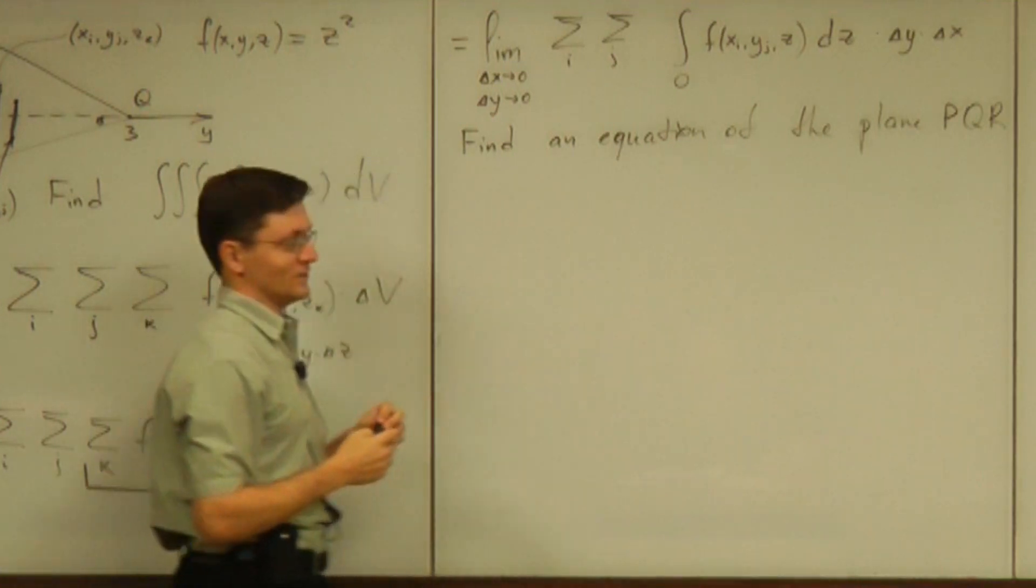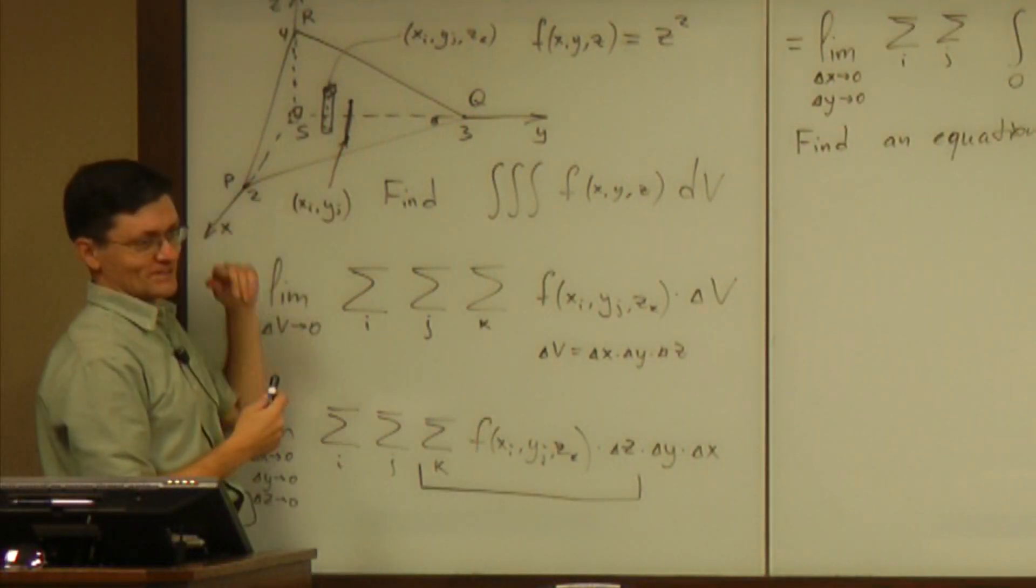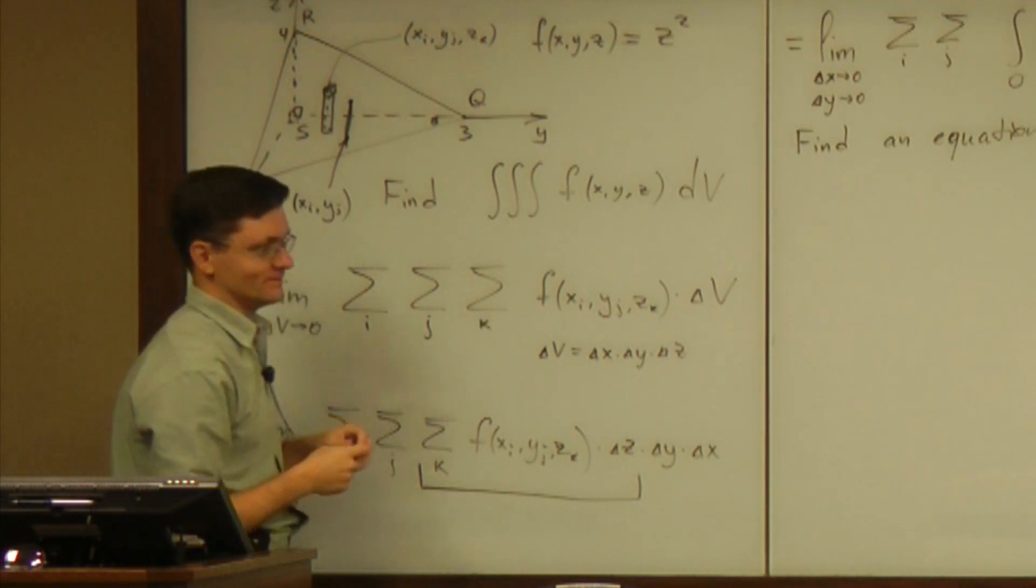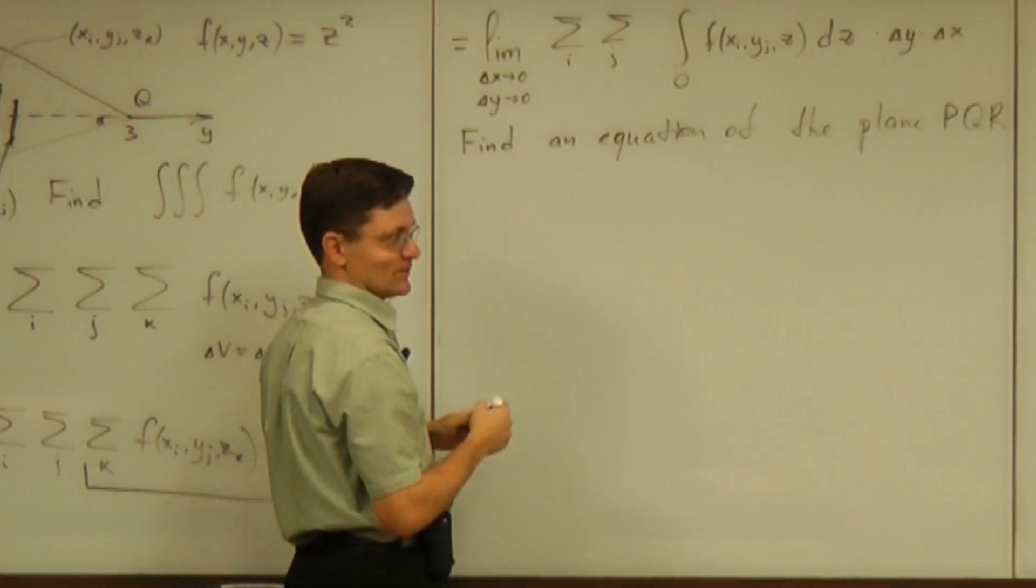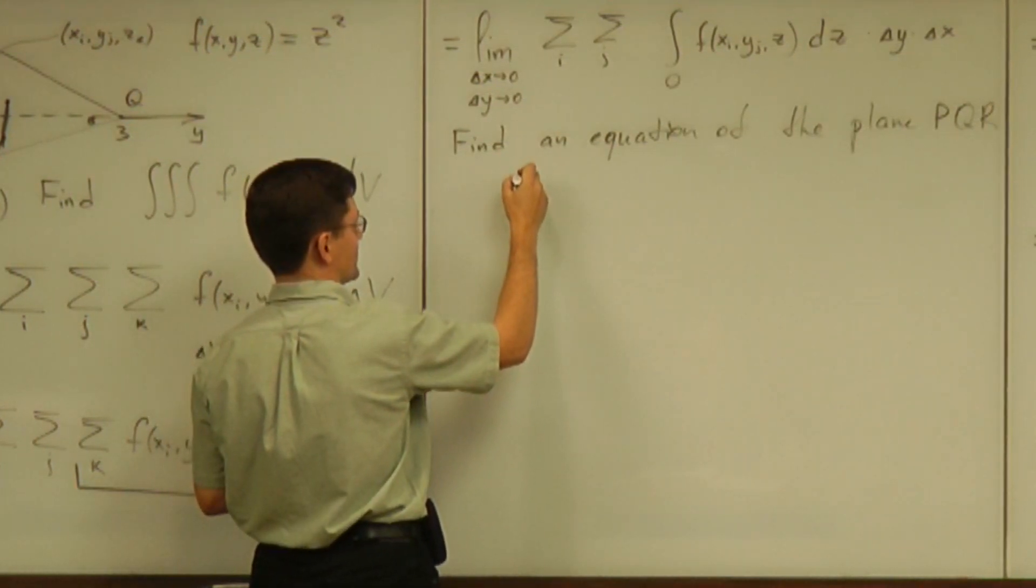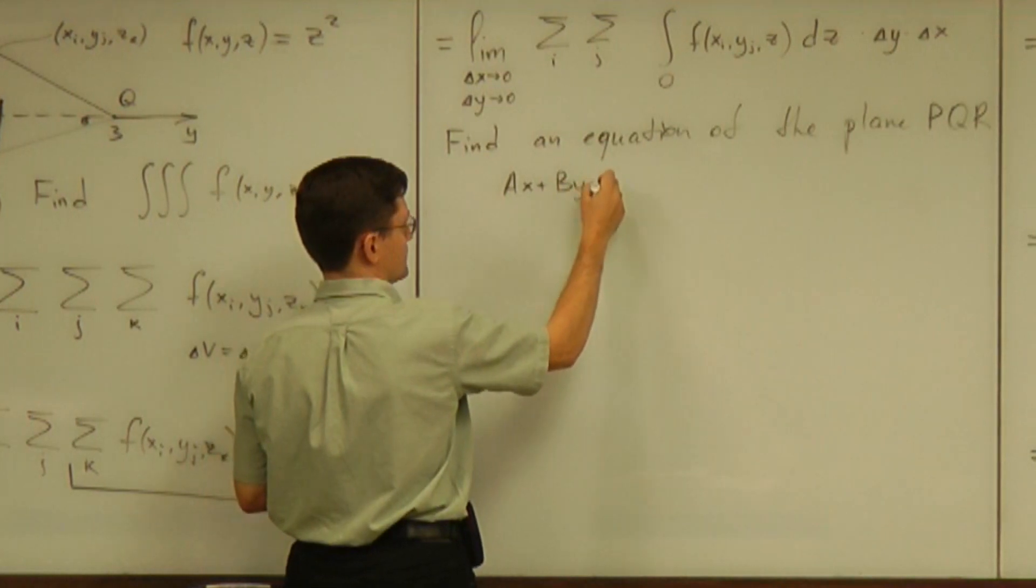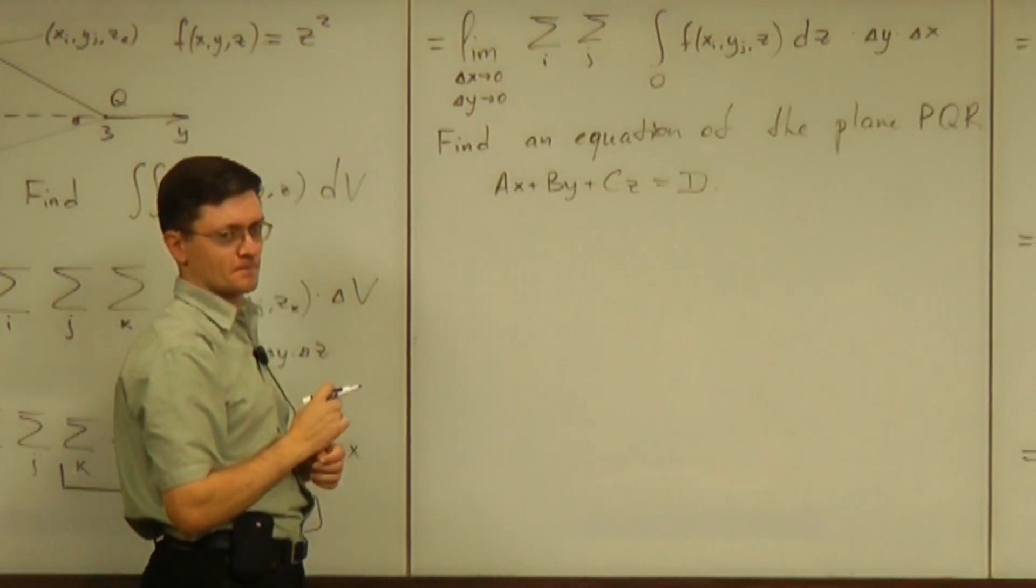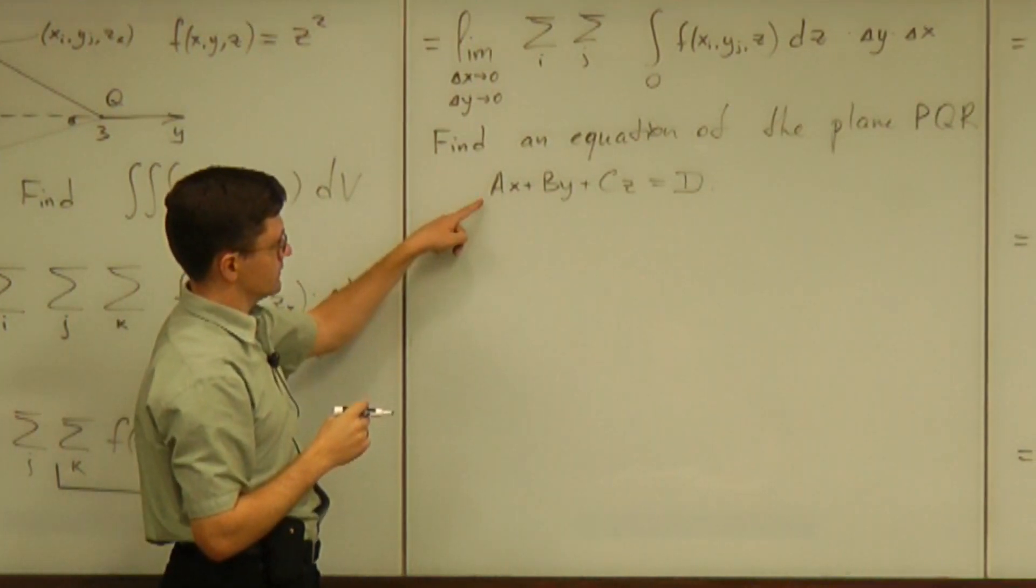So we find an equation of the plane that provides this limit of the plane PQR. Do you still remember how to find the equation of the plane through the given three planes? Well, let me pretend you successfully found it quickly. And the equation is ax plus by plus cz equals d.